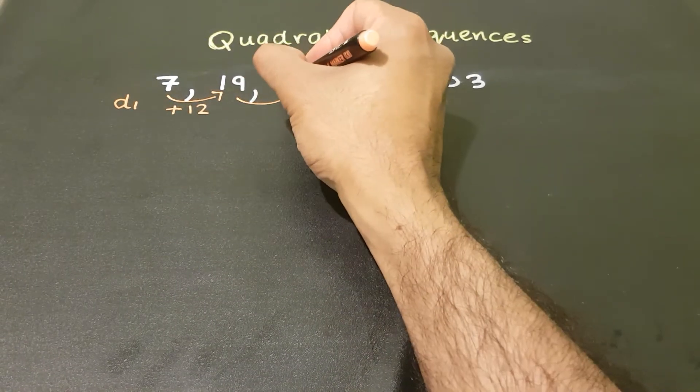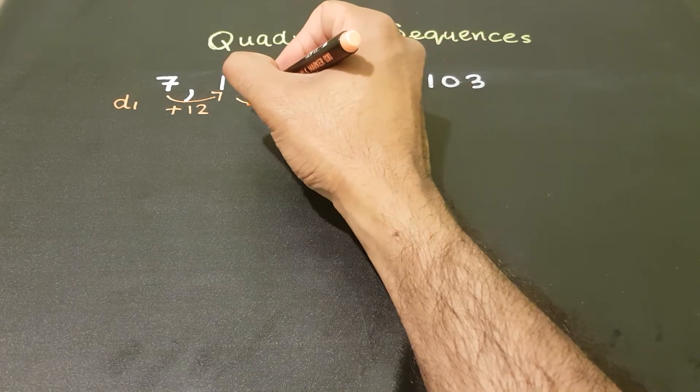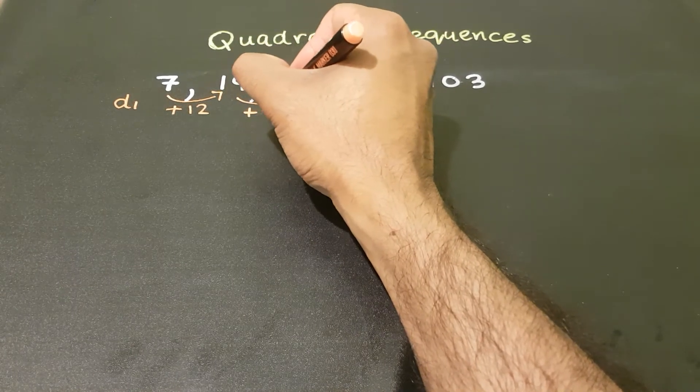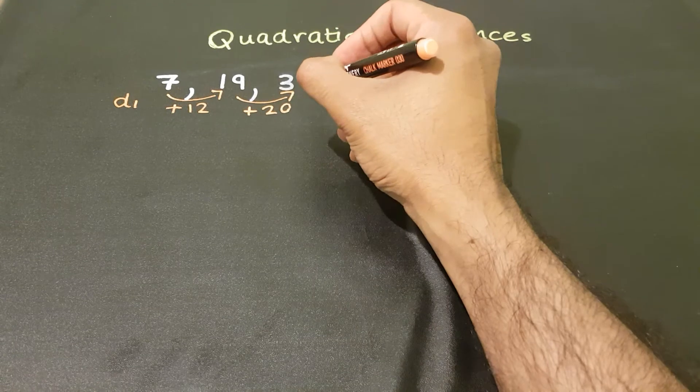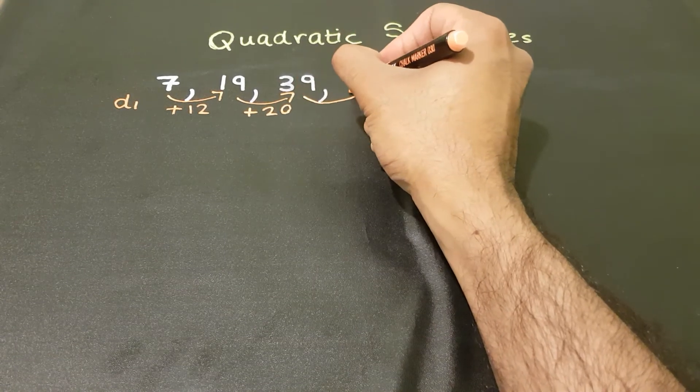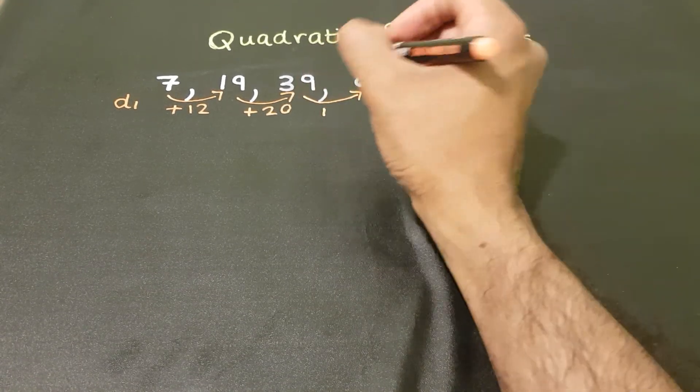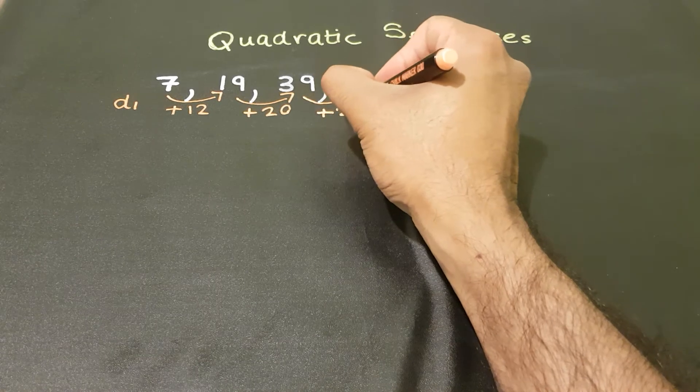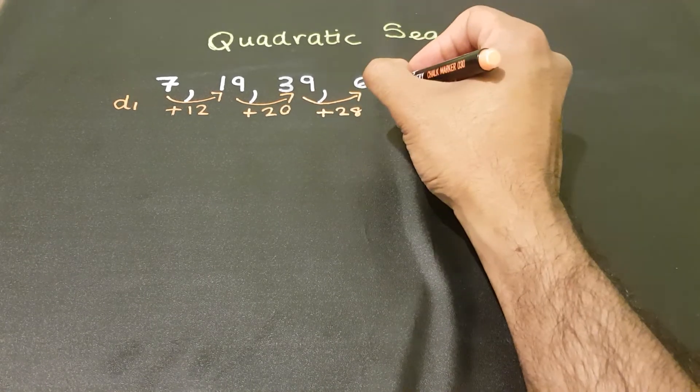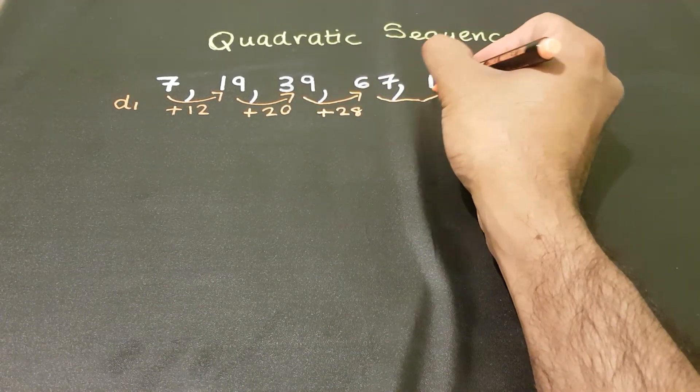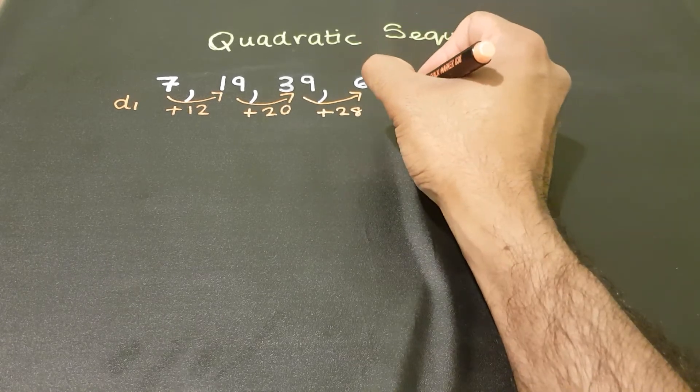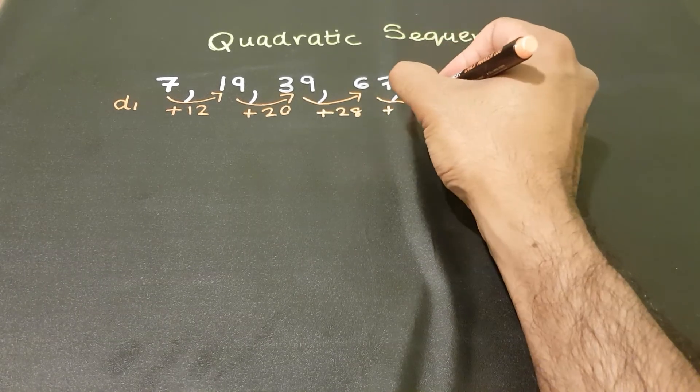19 to 39, that's add 20. So I'm basically finding the difference between two terms. 39 to 67, that's add 28. And 67 to 103, that's add 36.